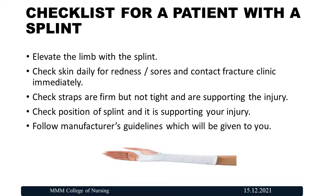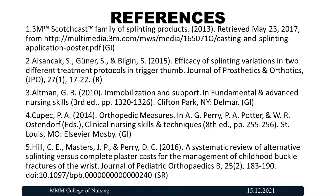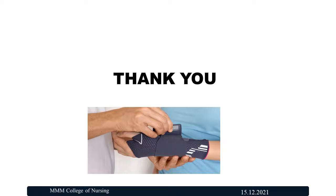Checklist for a patient with a splint: elevate the limb with the splint; check the skin daily for redness; contact the fracture clinic immediately if there are any concerns; check that straps are firm but not tight and are supporting the injury; check the position of the splint and that it is supporting the injury; follow manufacturer guidelines. Thank you.